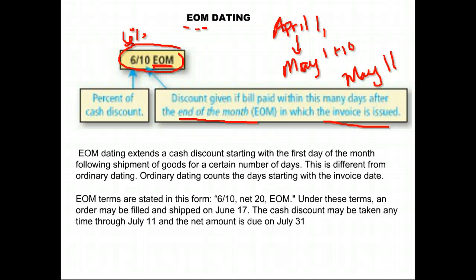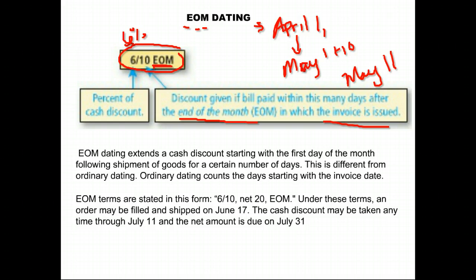It's not just 10 days from when they print the invoice — it's 10 days from the end of the month that they printed the invoice in. So if you're lucky and they print it at the beginning of the month, that gives you a whole month and 10 more days to still get the cash discount. If you don't pay by that time, you have to pay at least by the end of that month — the full amount.